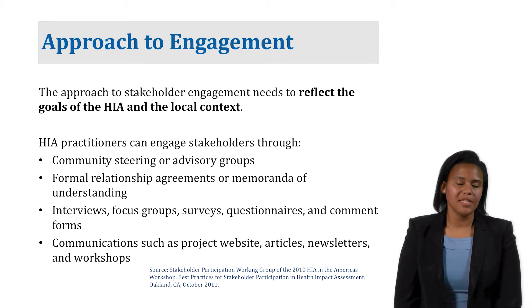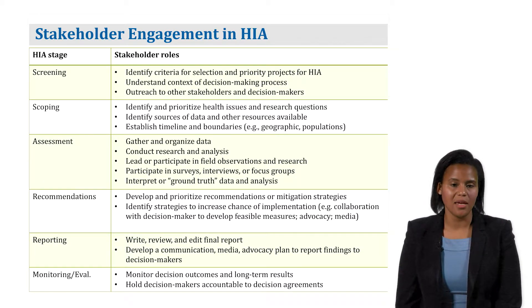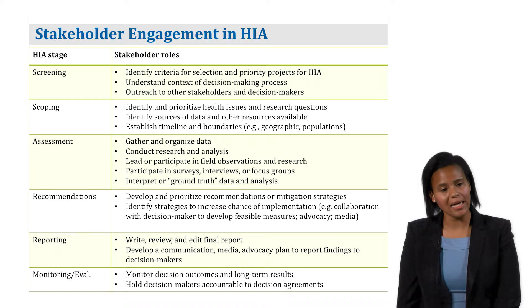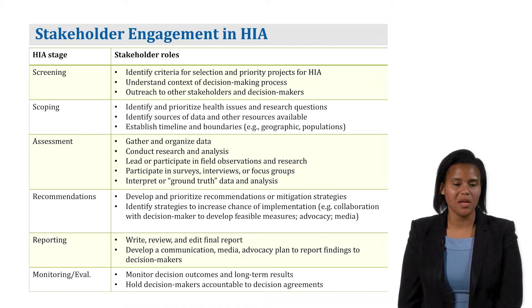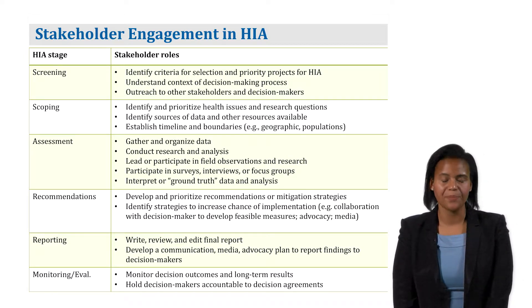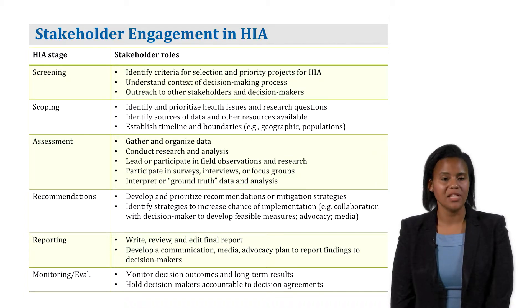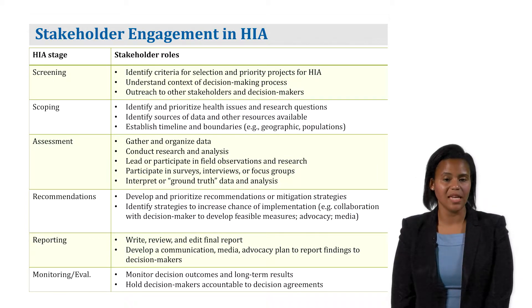This slide breaks down all the steps of the HIA process and the stakeholder roles. Starting with screening — we're trying to understand whether an HIA should be conducted. Most times we have a topic in mind, and sometimes stakeholders are part of that decision, but most times they're not. So this is probably the step with the least stakeholder engagement. Scoping is a great way to involve stakeholders — I've been part of scoping workshops where community members are drawing on boards and walls, using post-it notes to understand how things connect and talk about their role in the HIA process. During assessment, the community and stakeholders can be involved in gathering and organizing data.